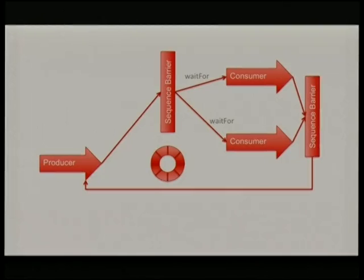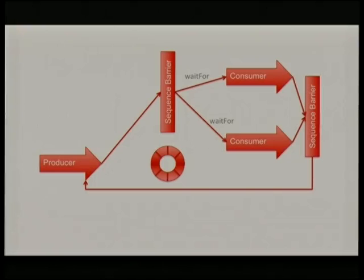The advantage of having sequence barriers as a fairly separate concern also means we can start doing more complex structures. We can have two consumers reading from the same ring buffer, and they will both immediately process in parallel the events once the publisher has made them available. They're both waiting on the same sequence barrier. Similarly, the sequence barrier preventing the producer from overrunning them is waiting for both consumers to reach the expected point — it's basically doing a min of their sequence numbers.